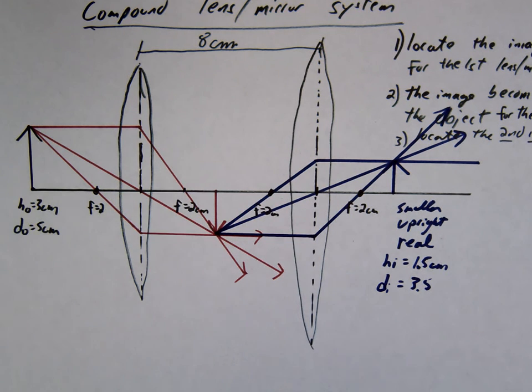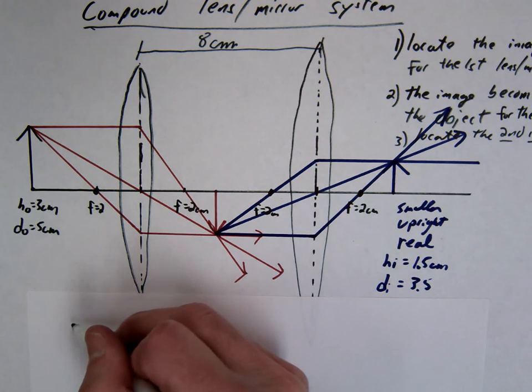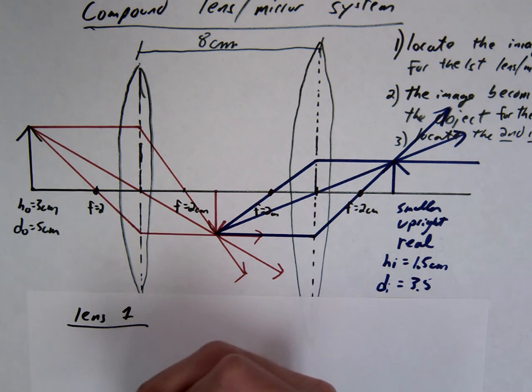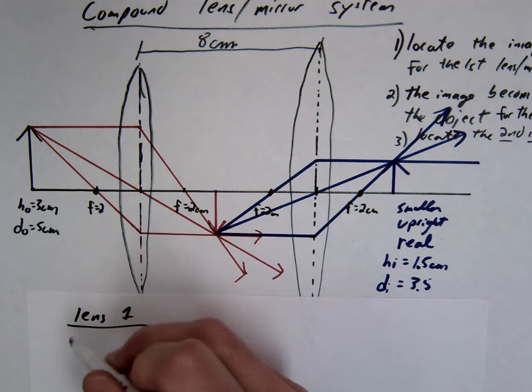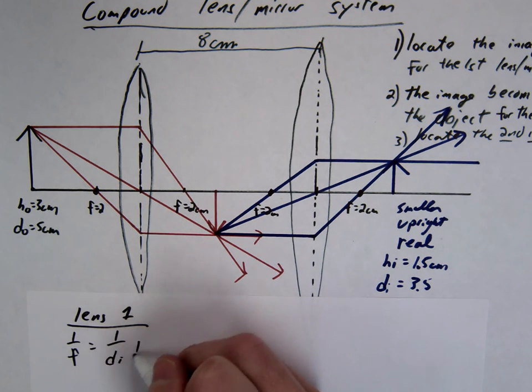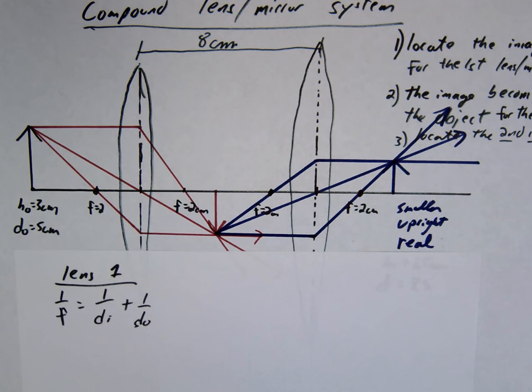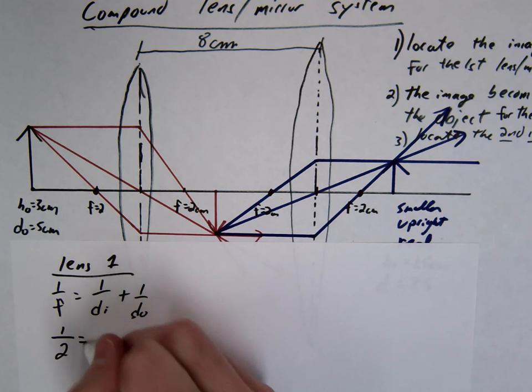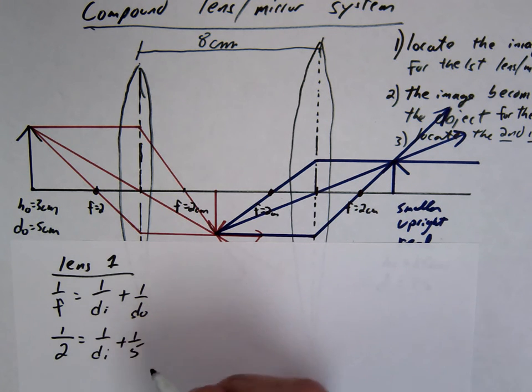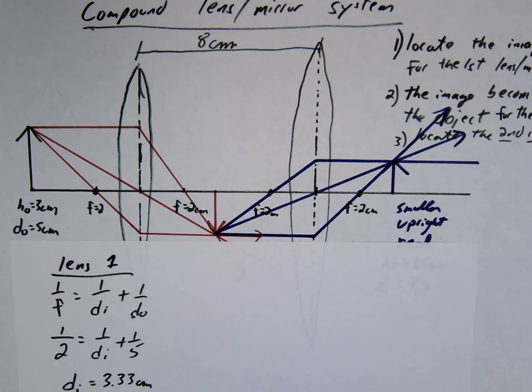Alright. Let's do the math. So again we're going to do it one at a time. And the image will become the object. So let's do it for lens one. Let's do the image distance first and then we'll do the height. So we use the same equation. 1 over F equals 1 over DI plus 1 over DO. 1 over 2 equals 1 over DI plus 1 over 5. So 10 thirds. 3.33. So that's our distance, 3.33.